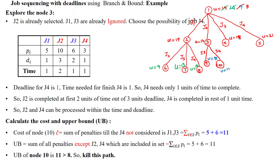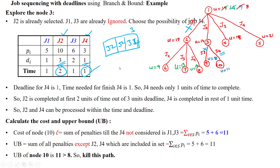Now combining job 2 with job 4, ignoring j1 and j3. Maximum deadline among j2 and j4 is 3. First two days for job 2, then one day for job 4 — feasible. Cost is the sum of penalties of j1 and j3 not considered: 5 + 6 = 11. Upper bound is also 11 since the same two jobs remain. Since 11 is greater than the minimum upper bound of 8, we kill this path.